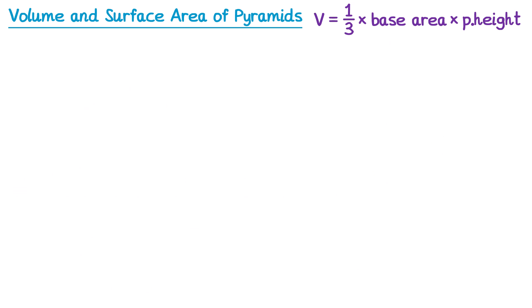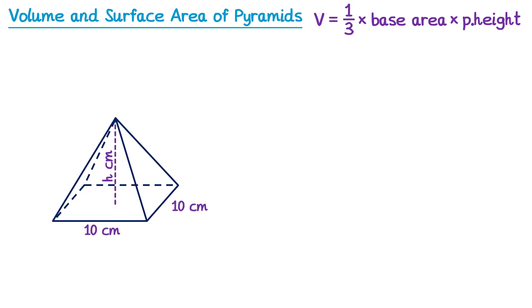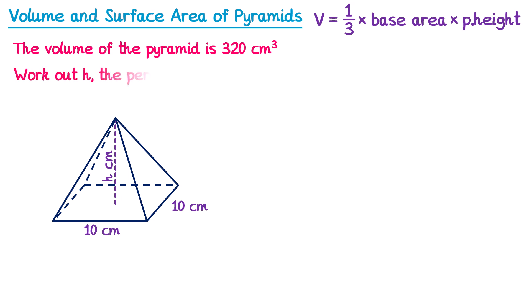Now sometimes we get trickier questions where we need to work backwards. Take this pyramid here — the question could say the volume of the pyramid is 320 centimetres cubed, work out h, the perpendicular height of the pyramid. So this time we've been told the volume and we need to work out one of the missing lengths.